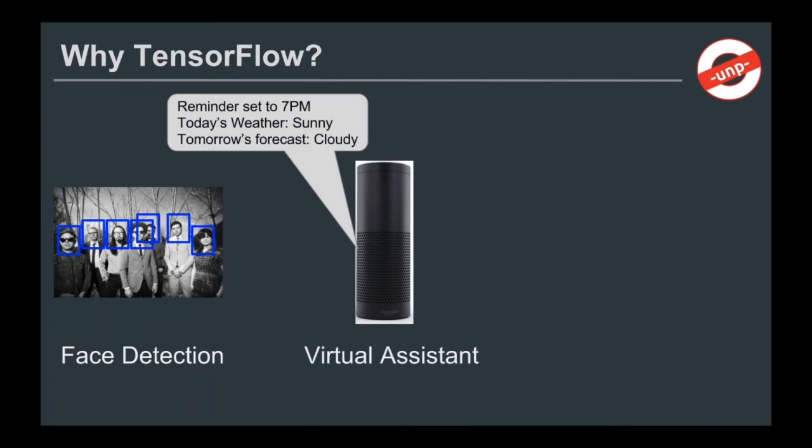You might have heard of Amazon Echo, which has an underlying layer of Alexa, the virtual assistant — the machine you can talk to. Other popular examples include Apple Siri, Microsoft's Cortana, and Google's OK Google or Allo, and so on.